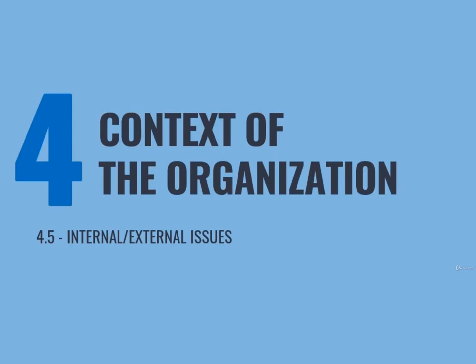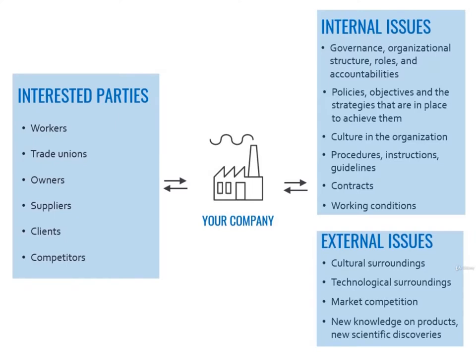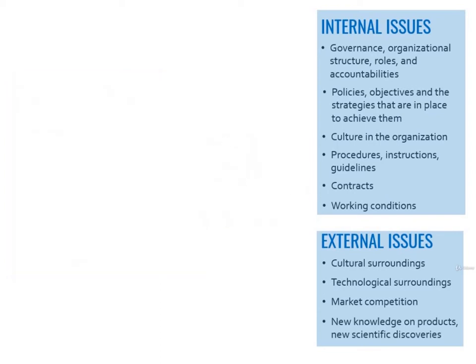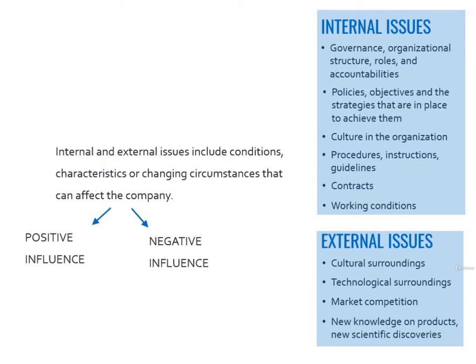Subchapter 4.5: Internal and External Issues. Now we can go back to the global representation of the context. We just explored the interested parties area; now we can talk about the other family — internal and external issues. Internal and external issues include conditions, characteristics, or changing circumstances that can affect the company. They can be positive or negative. The following are just generic examples of internal issues.